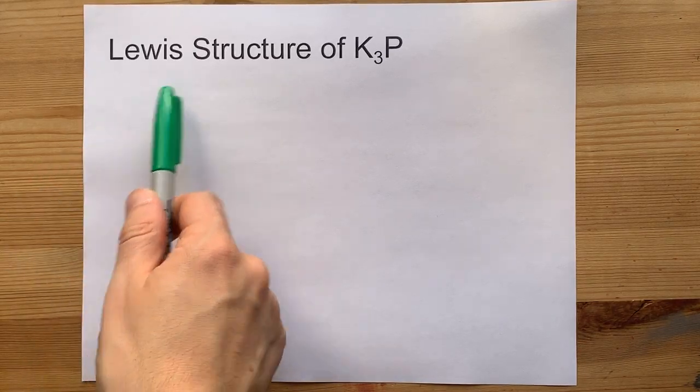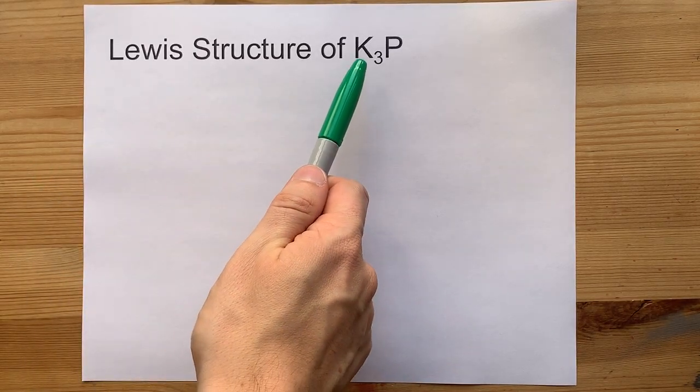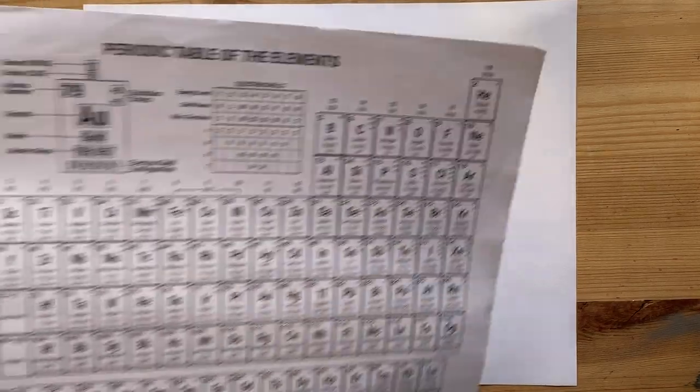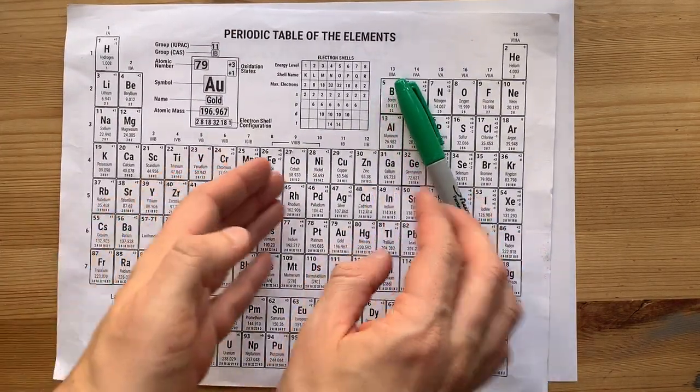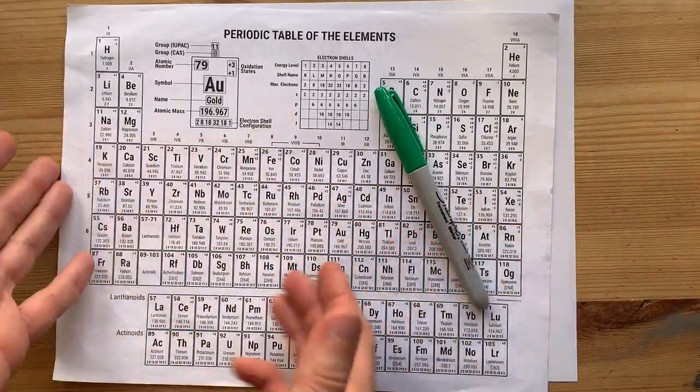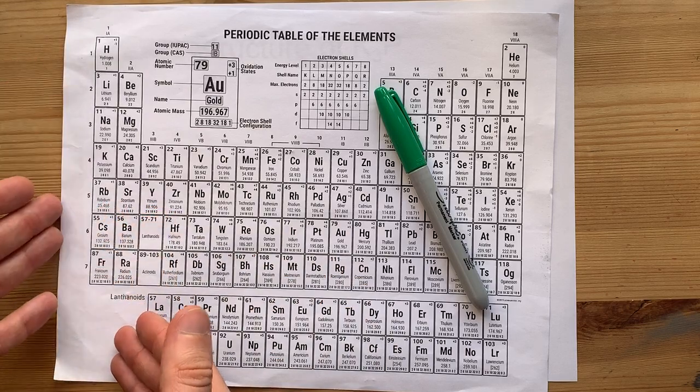Together let's draw the Lewis structure of potassium phosphide K3P. Now anything to the left of the staircase is generally a metal. Hydrogen is the only exception.